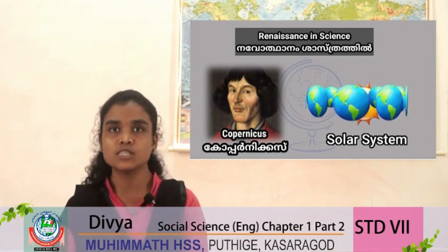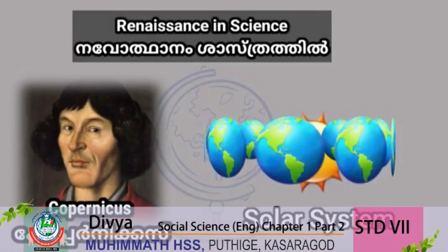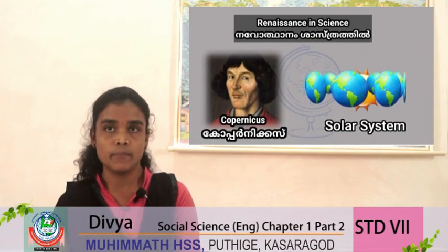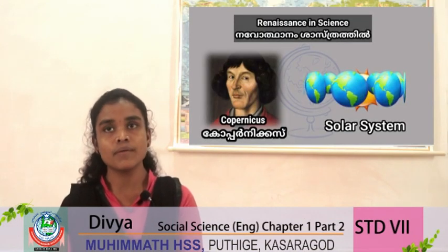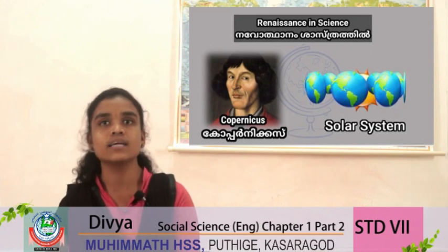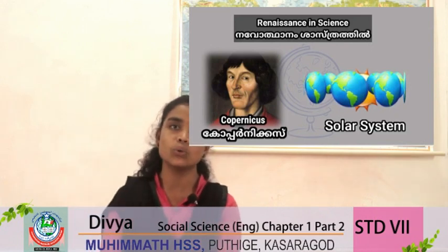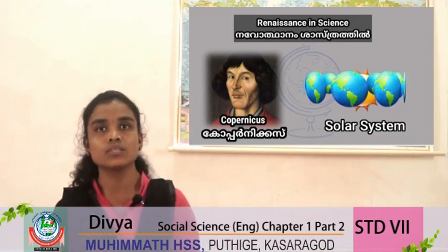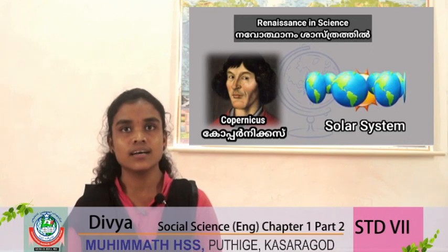The theory of the solar system by Copernicus is one of the major developments in the field of science during the Renaissance period. According to this theory, he proved that earth is not the center of the universe — the sun is the center of the solar system and the universe, and all other planets including earth revolve around the sun.